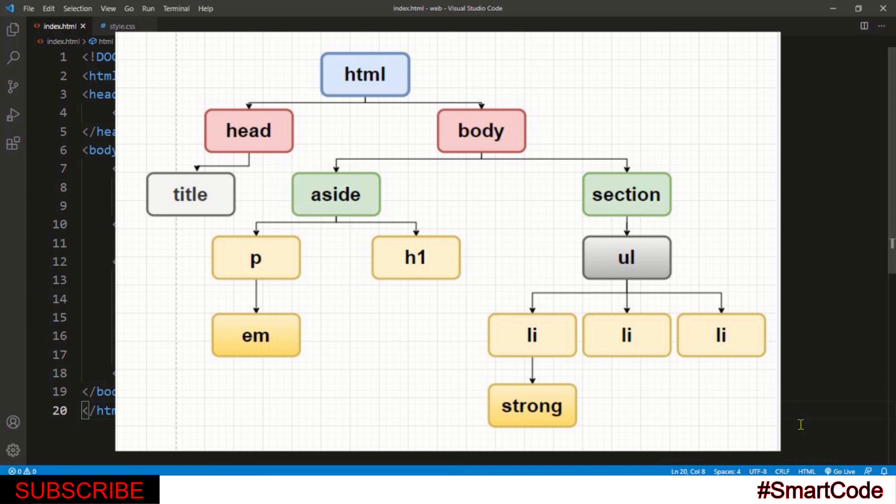So that was all about the HTML family tree and I hope you understand the terms like ancestors, descendants, parents, children, and siblings. Now you know the HTML family tree. You can go ahead and learn CSS descendant selectors and thanks for watching this tutorial.